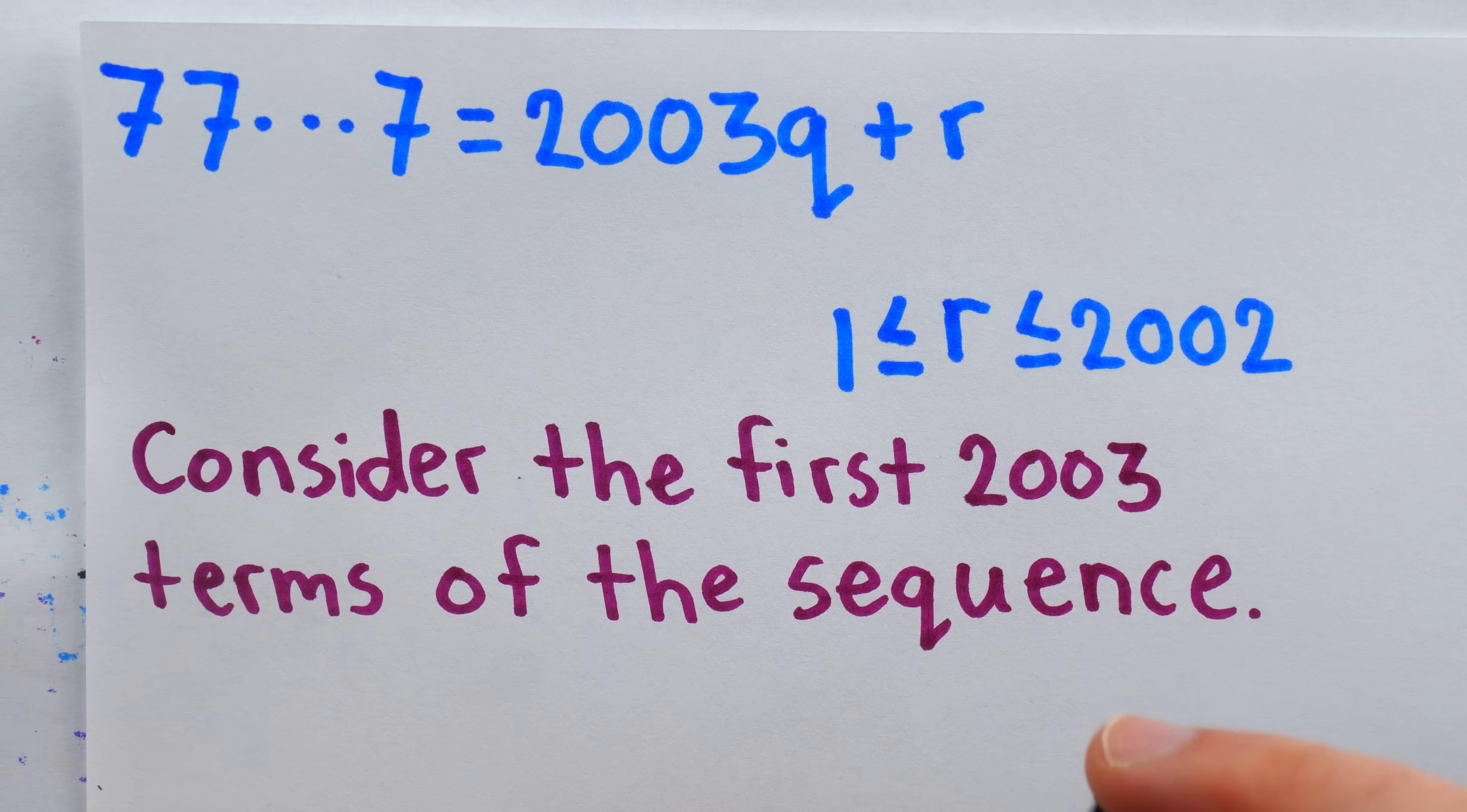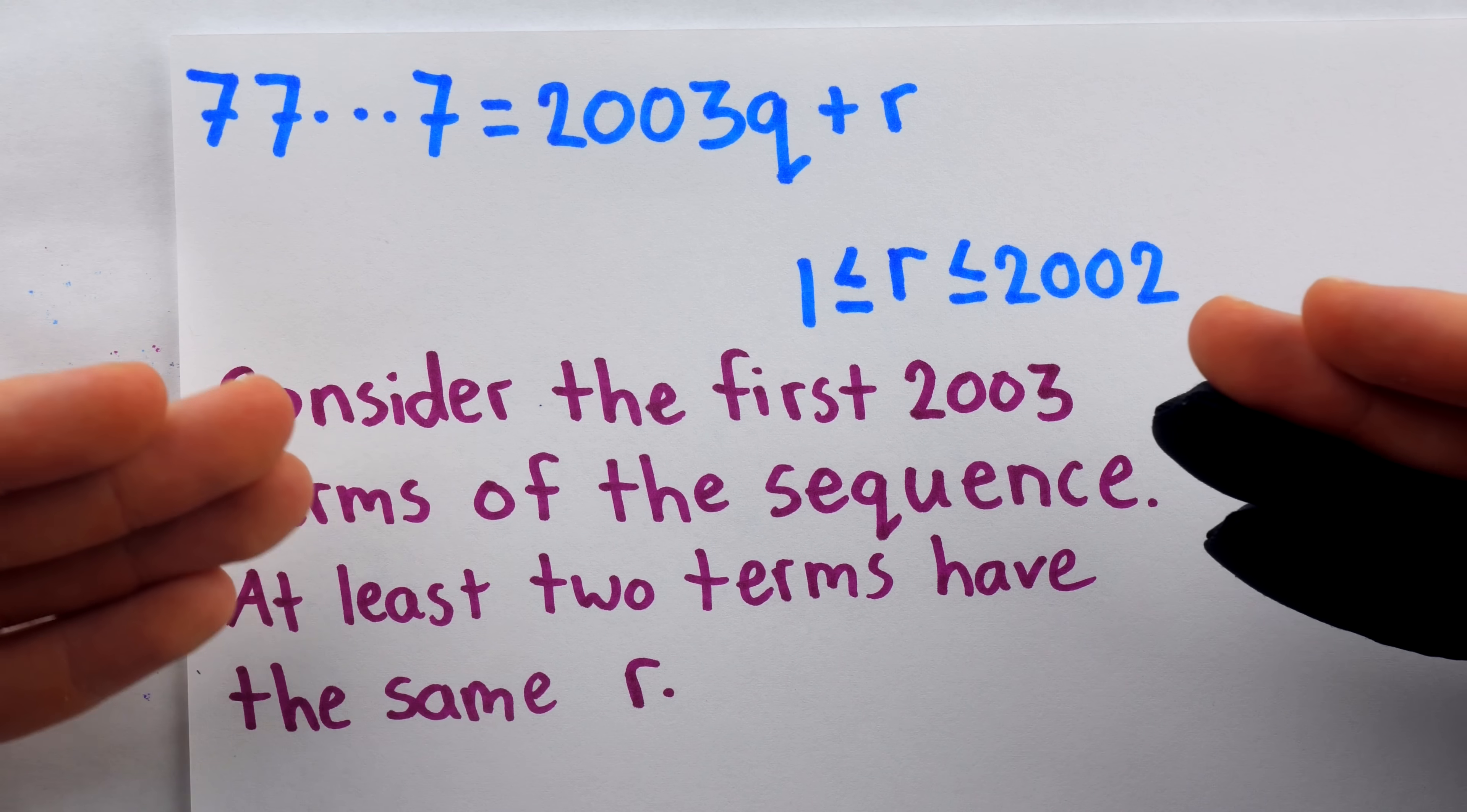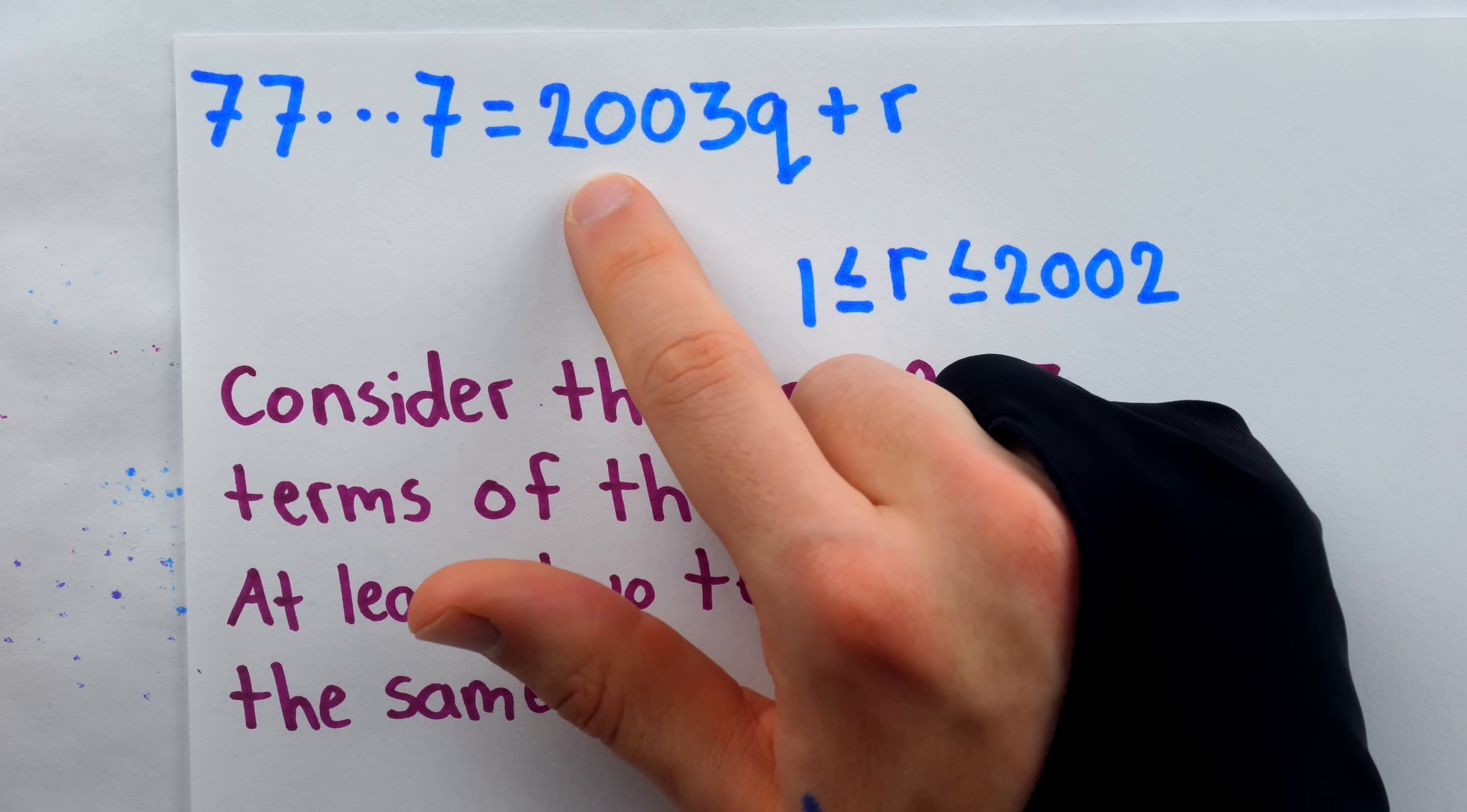That's a result of what's called the pigeonhole principle. The pigeonhole principle tells us if there are more pigeons than there are holes, at least two of the pigeons have to belong to the same hole. In our situation, there are more terms than there are possible remainders, so at least two of the terms have to have the same remainder when divided by 2003.